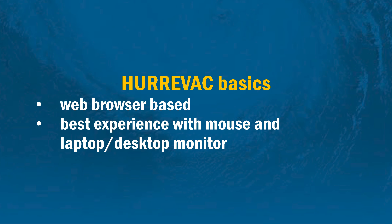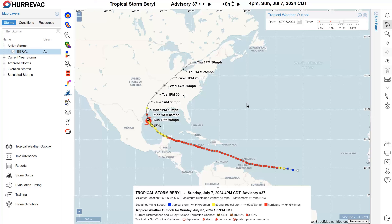HuraVac is web browser-based, which means there's nothing to install or download. It runs on Chrome, Firefox, or Edge — whatever your preference. You're going to get the best experience by using a device that has a mouse and a fairly large display like a laptop or a desktop monitor. This is the view we see immediately after the program opens. After entering my username and password, I get to this large tracking map.